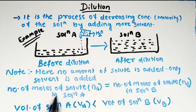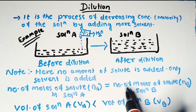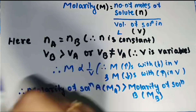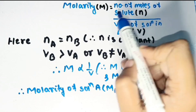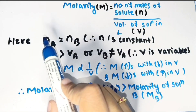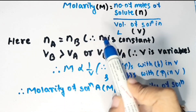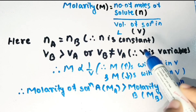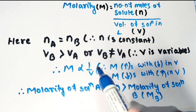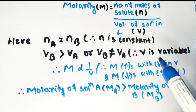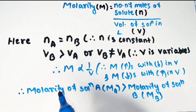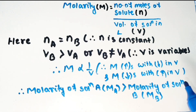In this case no solute is added, only solvent is added. Therefore, number of moles of solute in solution A (Na) equals number of moles of solute in solution B (NB). Also, volume of solution A (VA) is less than volume of solution B (VB). Since N is constant and V is variable, molarity M is inversely proportional to volume. That means molarity increases with decrease in volume and decreases with increase in volume. We can conclude that molarity of solution A (MA) is greater than molarity of solution B (MB).